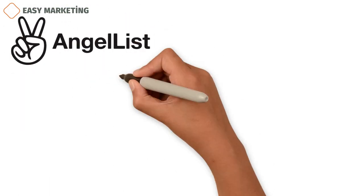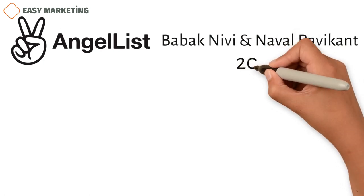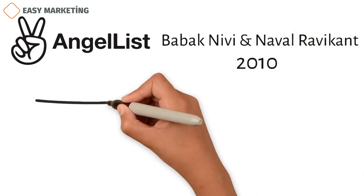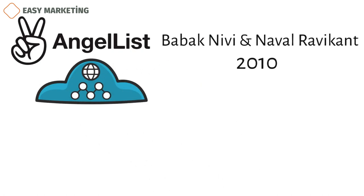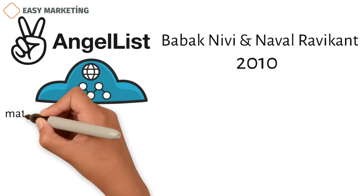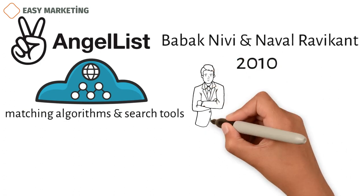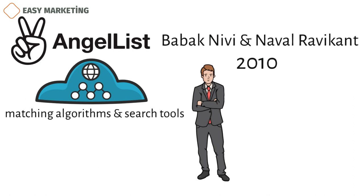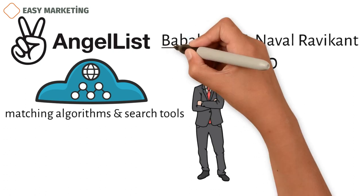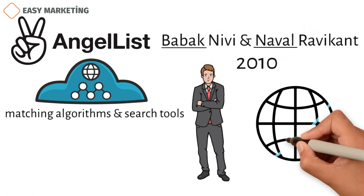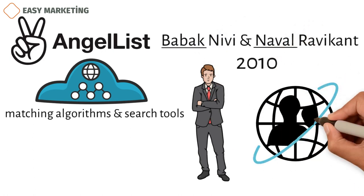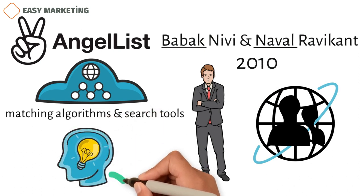Angelist. Babak Nivi and Naval Ravikant used the concierge MVP to start Angelist in January 2010. When you think about Angelist now, you might picture a large database of companies and investors that is supported by sophisticated matching algorithms and search tools. When you take away everything else and put a person in its place, what's left is the original Angelist. In the early days of Angelist, Babak and Naval used their large network of contacts to put entrepreneurs in touch with investors. They didn't make their first website until they thought their idea had potential.